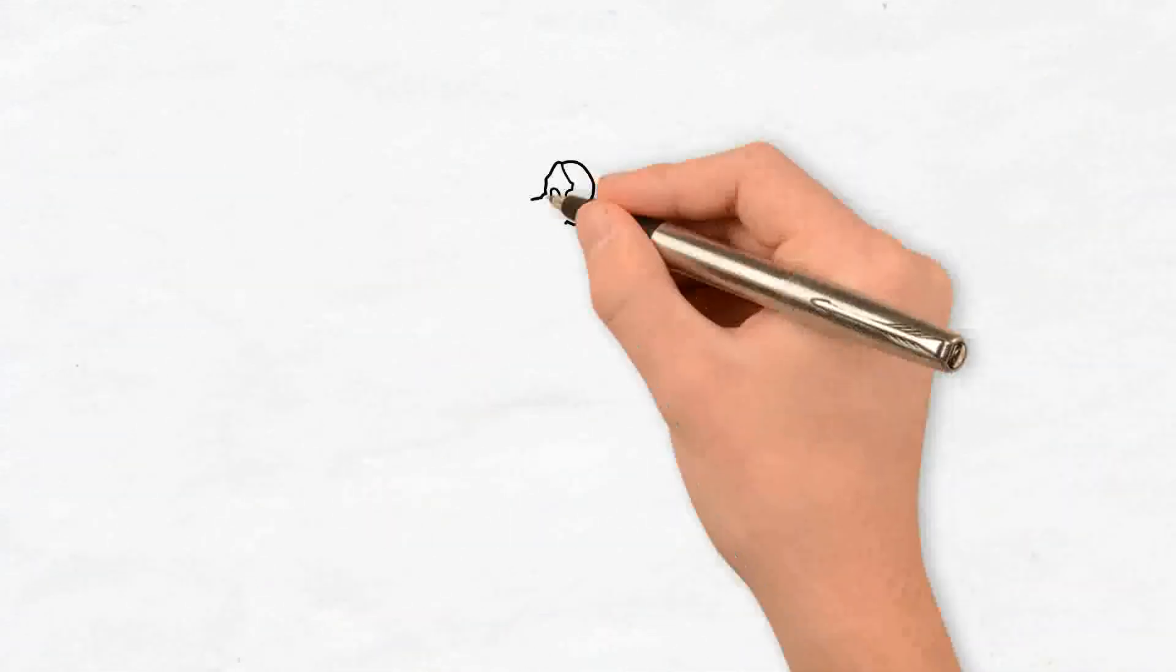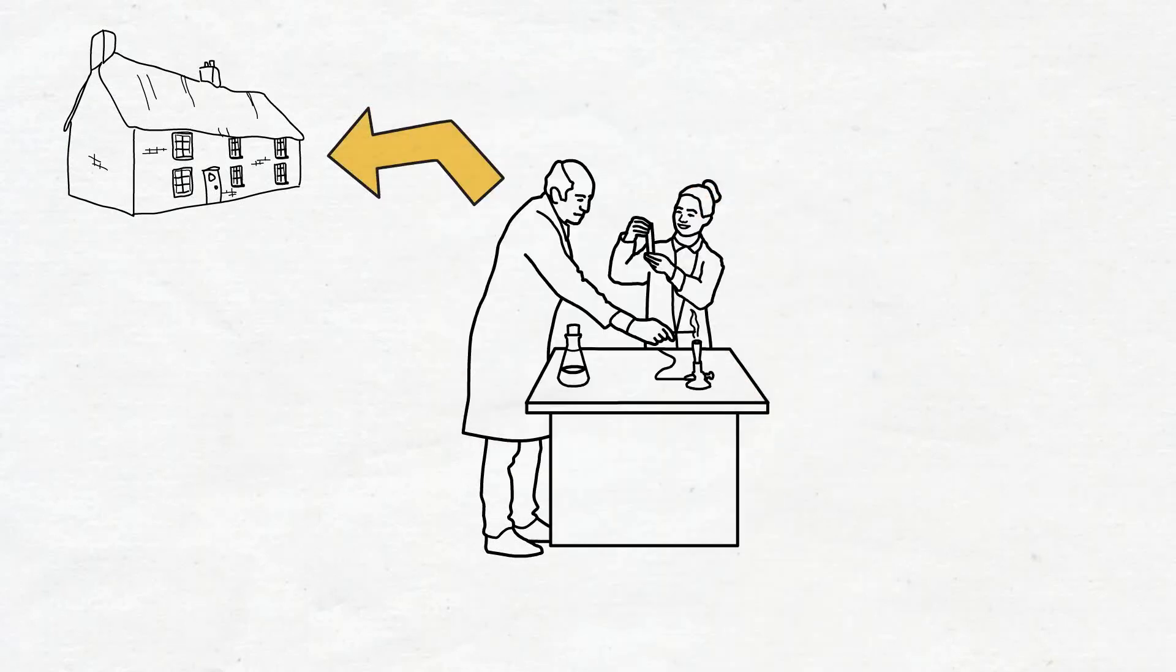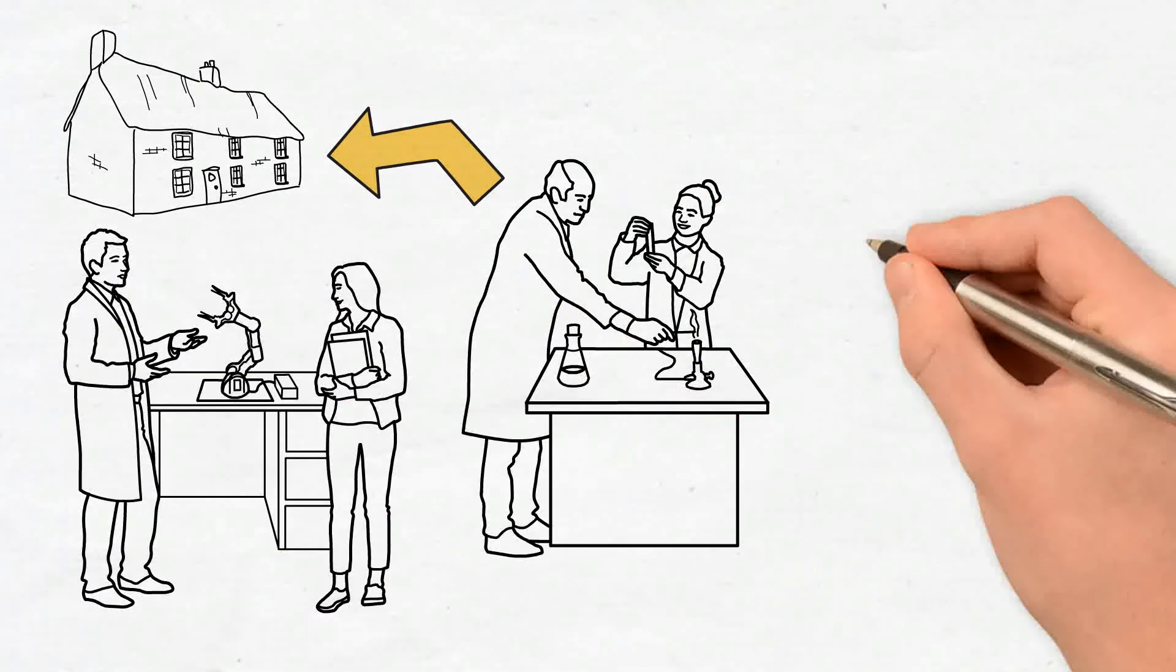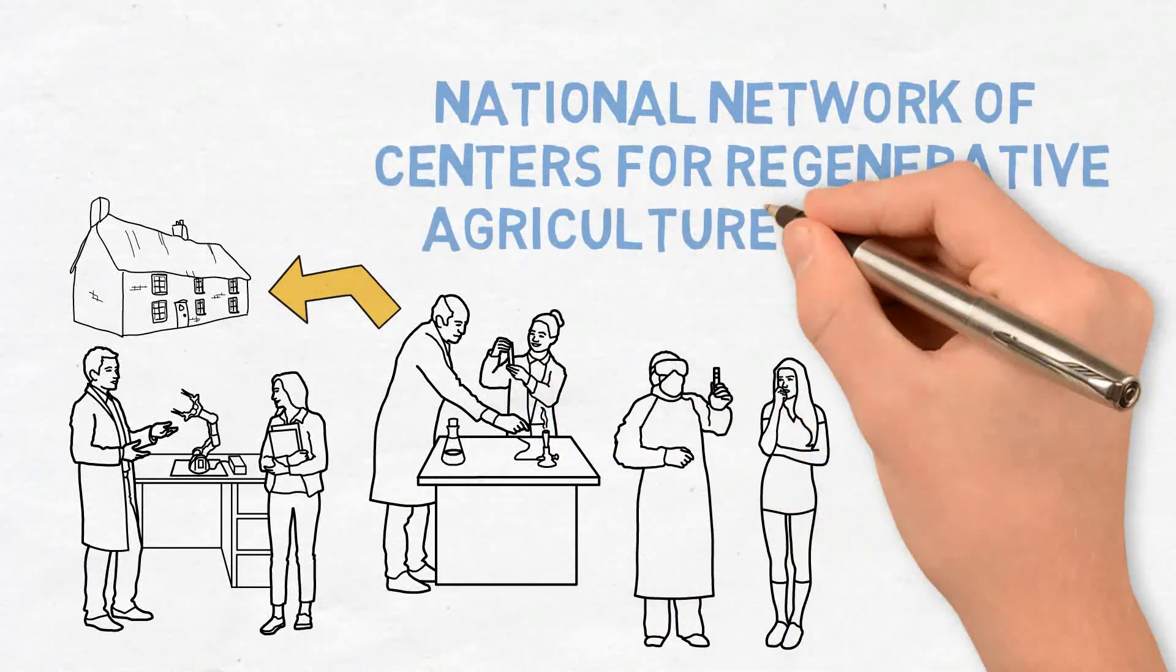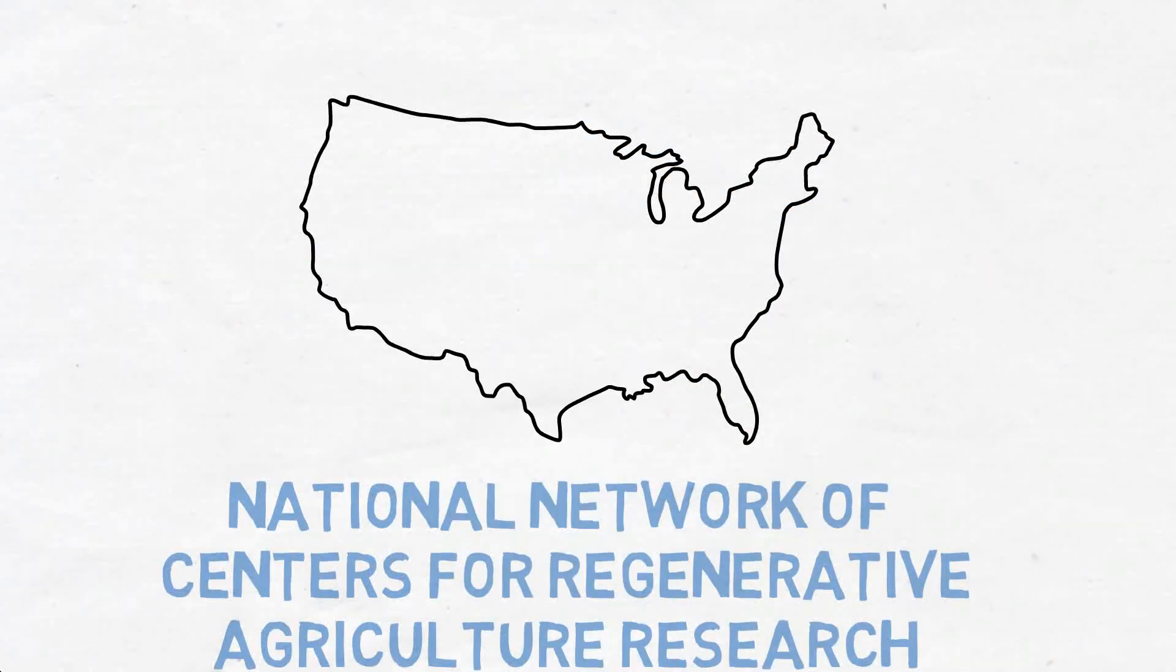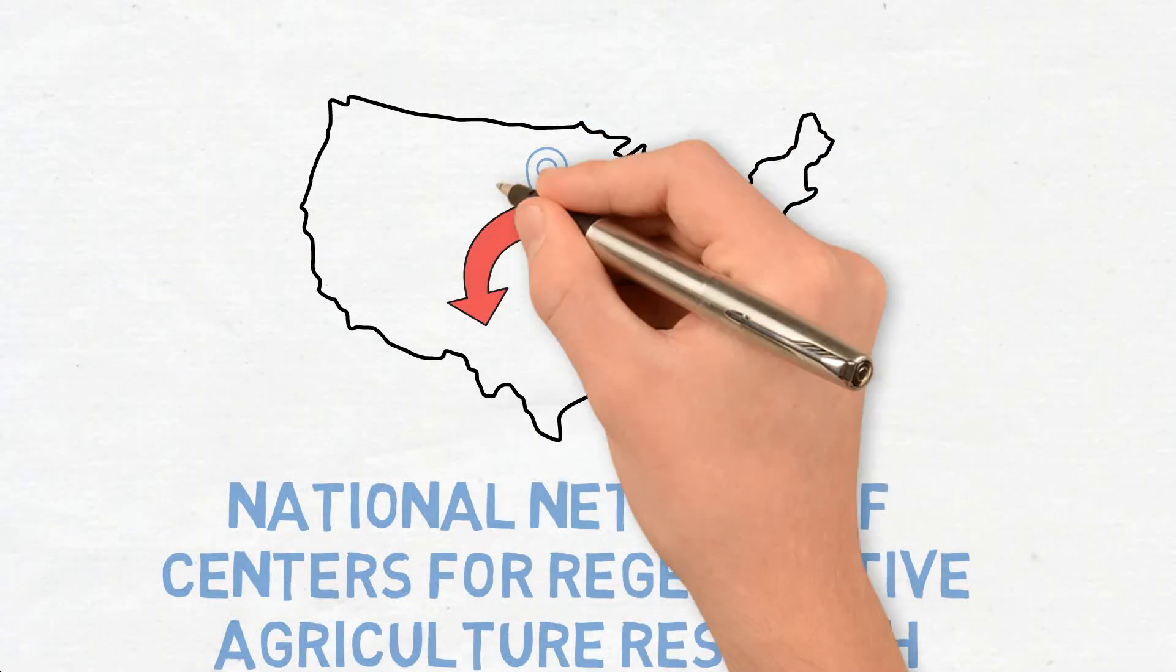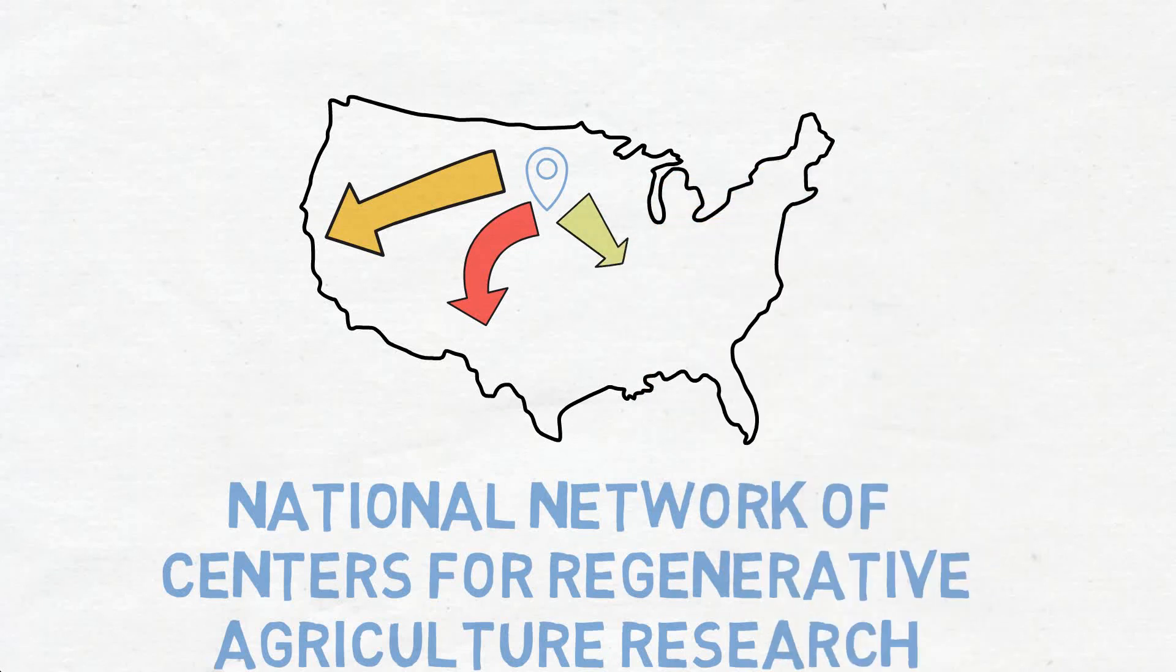So the research facility is right here on Blue Dasher farm. And we have a scientific staff that's located here. This is the first in what's becoming a national network of these centers for regenerative agriculture research. So we're looking at expanding into Colorado and California in the next year, maybe Iowa, and just starting to extend our reach.